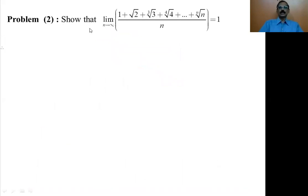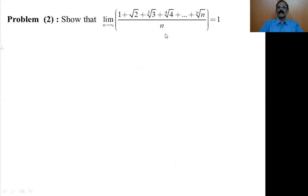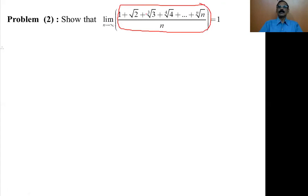Now we will show that the limit of (1 + √2 + ∛3 + ⁴√4 + ... + ⁿ√n) divided by n as n tends to infinity is 1. If you look at this expression, it has a first term, second term, third term, fourth term, up to the nth term, all divided by n. This looks like the arithmetic mean of n terms.